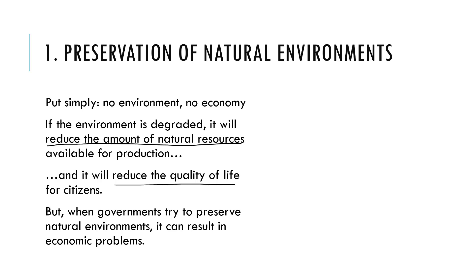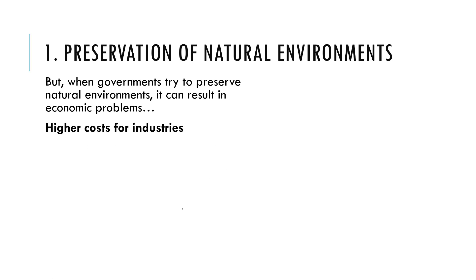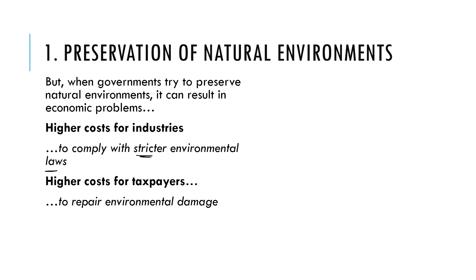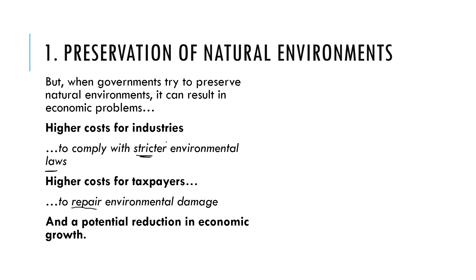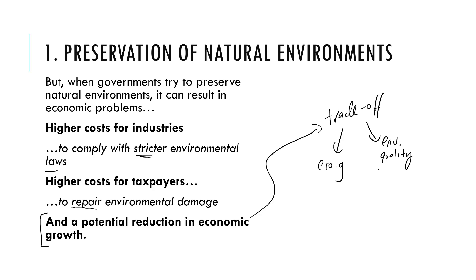When governments try and fix things, it can also result in other economic problems. For example, governments could impose higher costs for industries through stricter environmental laws. Taxpayers might have to pay more to repair environmental damage. Overall, higher costs for industries, higher taxes for taxpayers, and changes to production could reduce economic growth — reflecting the trade-off between economic growth and environmental quality.